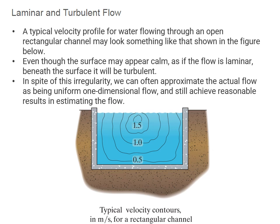When discussing flow, it is important to distinguish between laminar flow and turbulent flow. A typical velocity profile for water flowing through an open rectangular channel may look like the figure shown. Even though the surface may appear calm as if the flow is laminar, beneath the surface it will often be turbulent. In spite of this irregularity, we can often approximate the actual flow as uniform one-dimensional flow and still achieve reasonable results.